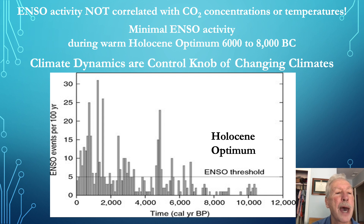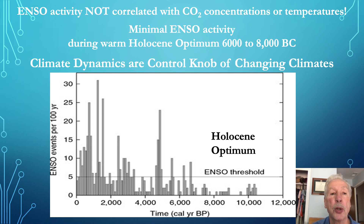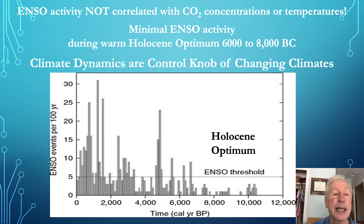Like the Madden-Julian oscillation, El Niño cycles are not correlated with CO2 concentrations or warming temperatures. During the warmest period of the Holocene — the Holocene optimum between 6000 and 8000 BC — there was minimal El Niño activity during those warm periods. What all this suggests is that these natural climate dynamics are the natural control knob of changing climates.